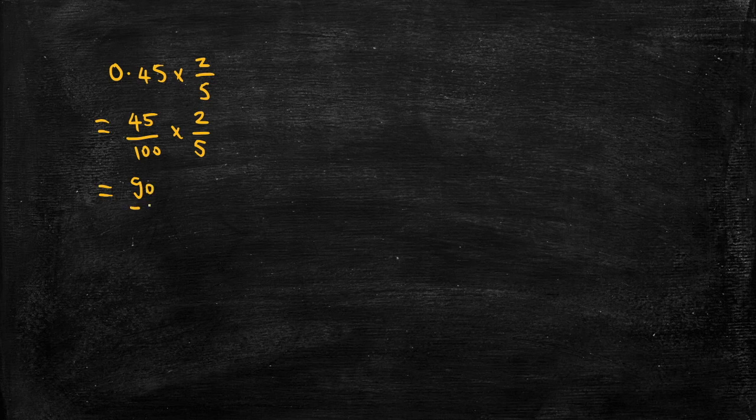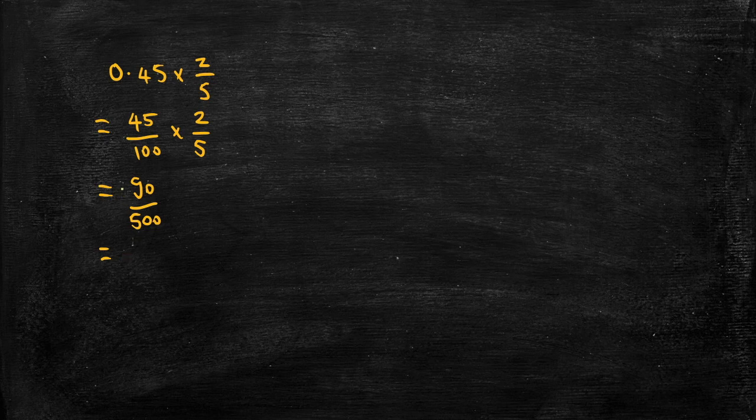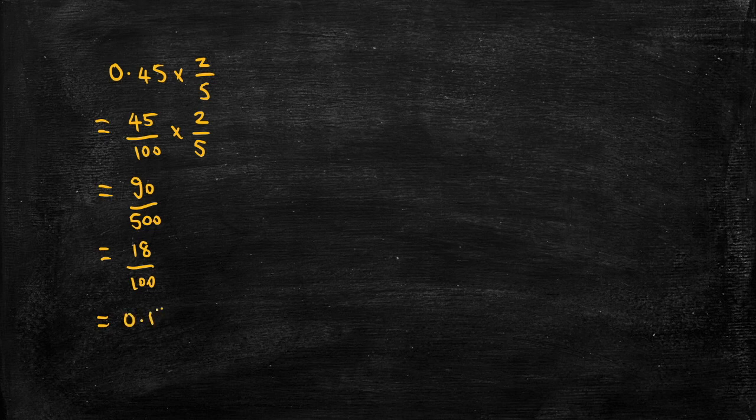So multiply the numerators, multiply the denominators, and then we want to simplify. So if I divide numerator and denominator by 5, we'll get 18 over 100, so as a decimal 0.18.